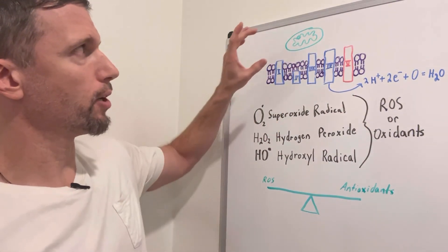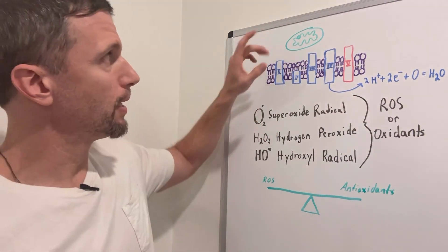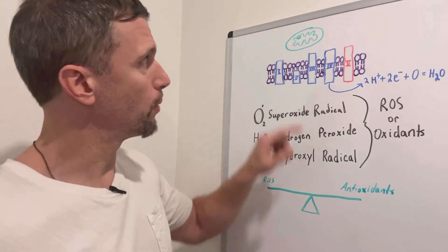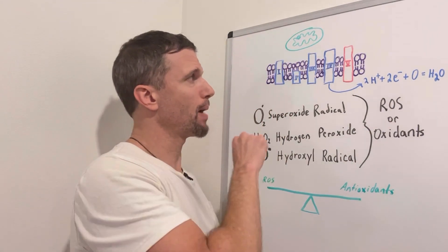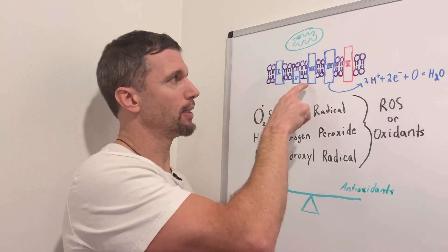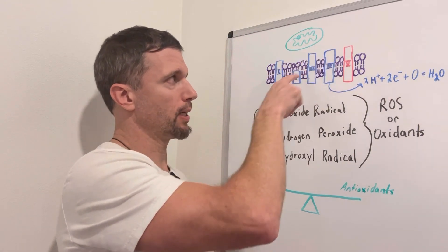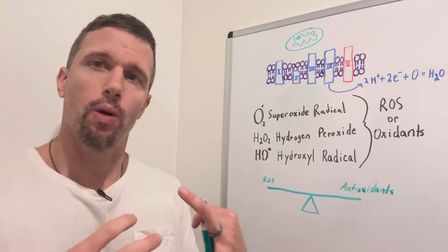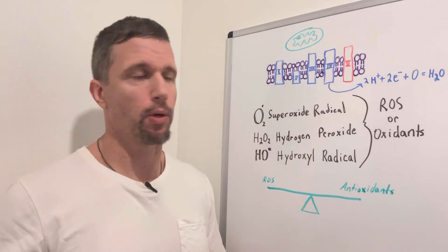So our mitochondria are where we make the ATP. We have an outer lipid bilayer and we have an inner lipid bilayer. In that inner lipid bilayer, we have these proteins embedded, these integral proteins and peripheral proteins embedded within that inner mitochondrial membrane.